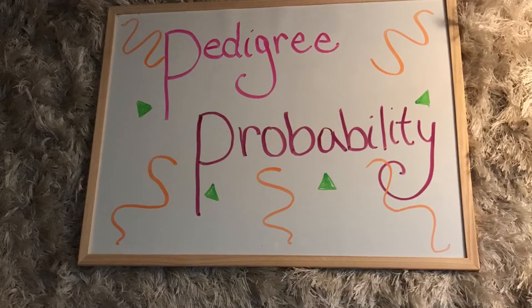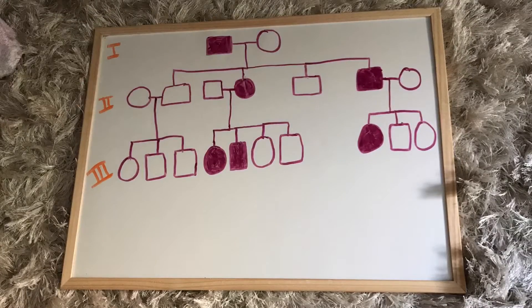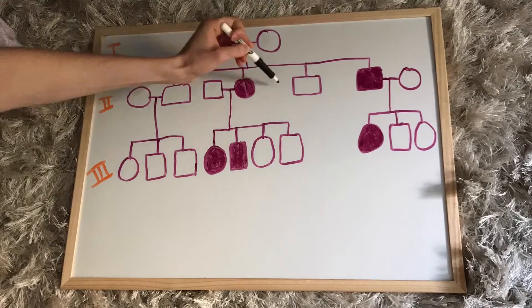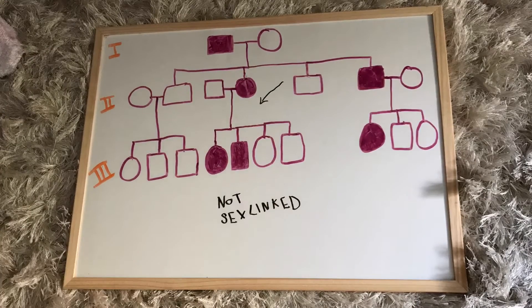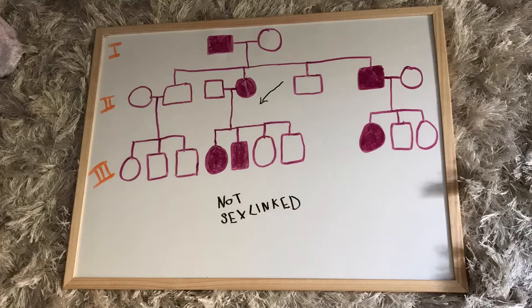With pedigree probability, the first thing we have to look at is mode of inheritance. So with this example, let's start with sex linkage, which with the second family we see it can't be because you have an affected mother and a son who is not affected.